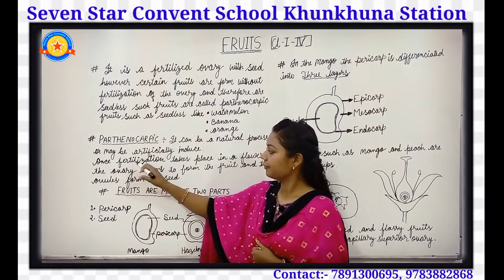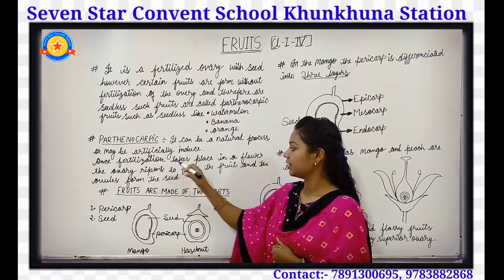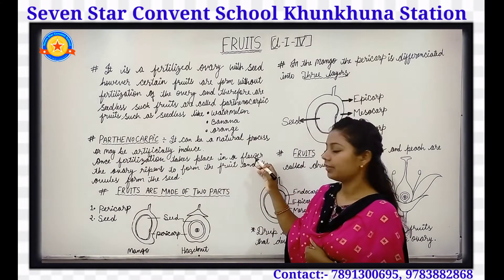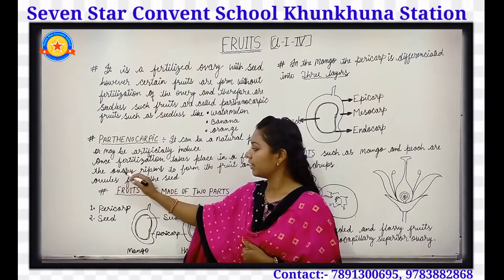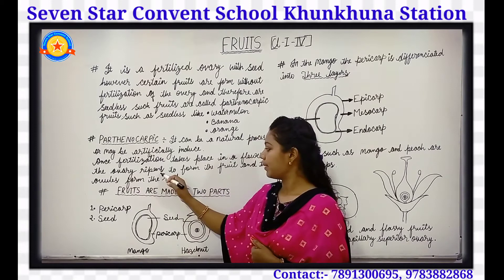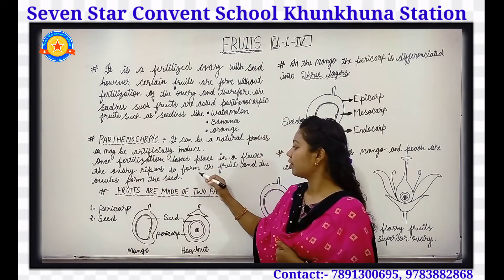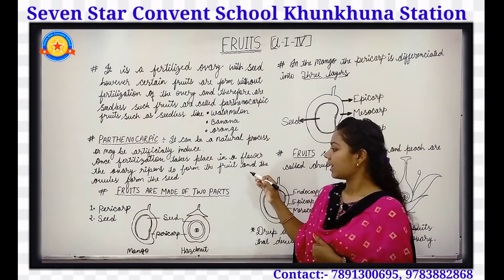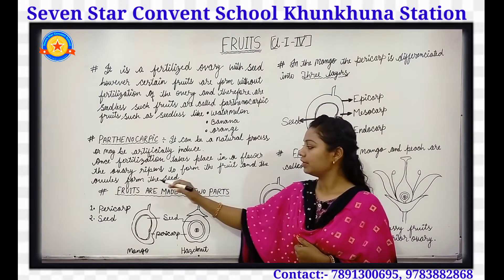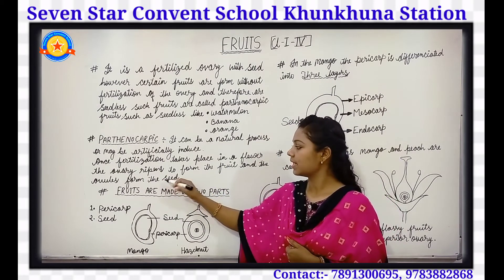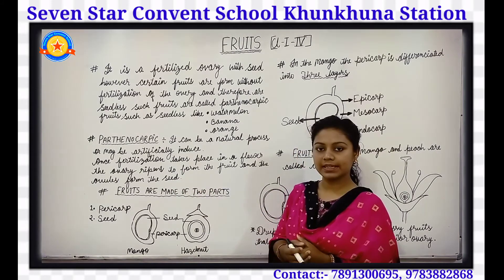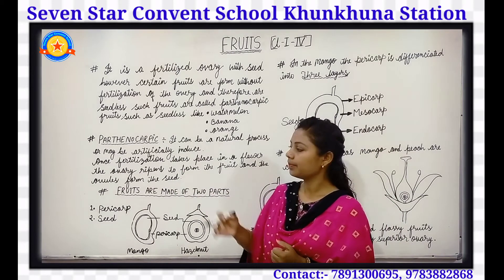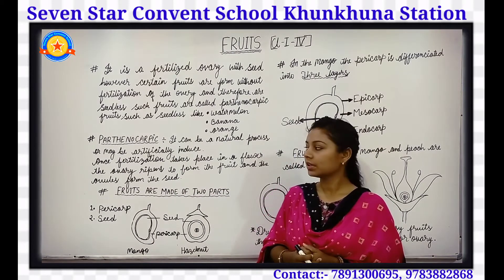Once the fertilization takes place in a flower, then the ovary ripens to form the fruit and the ovules form the seed. This is about the parthenocarpic.